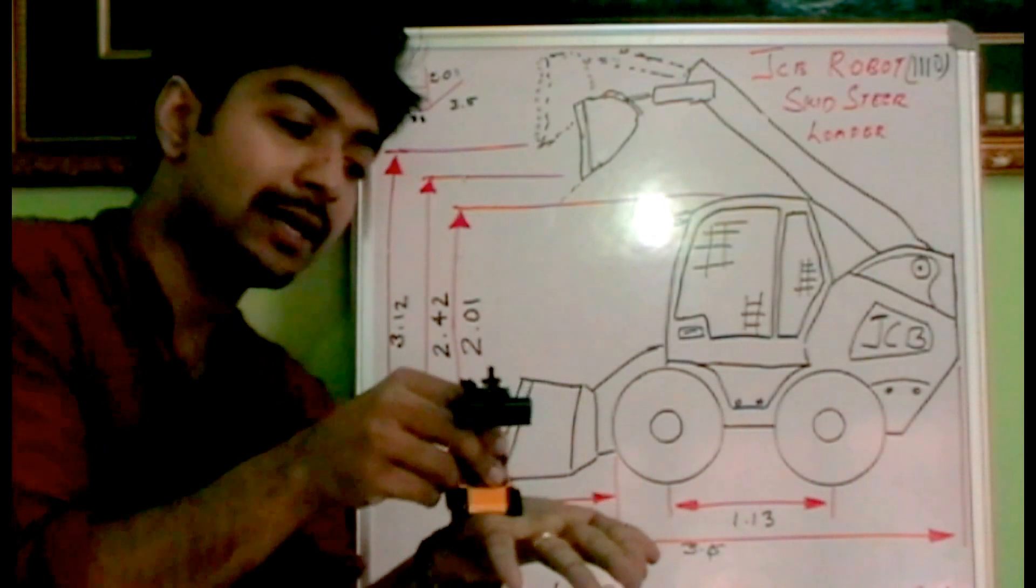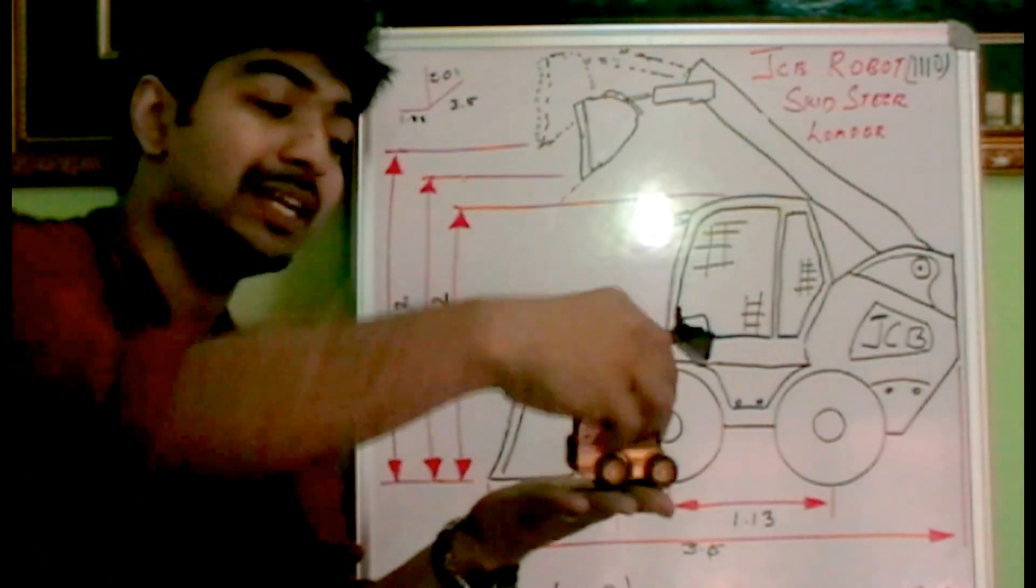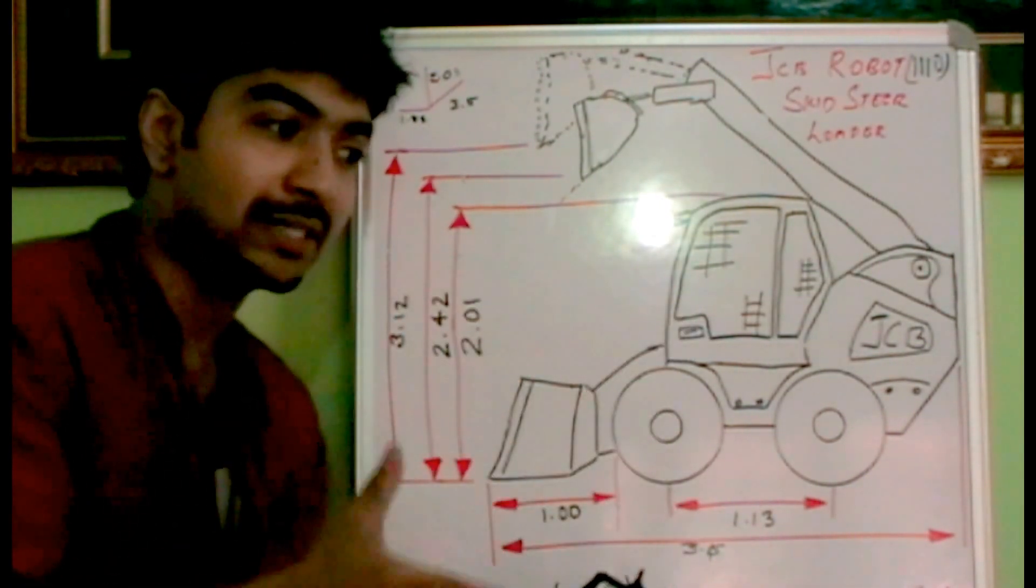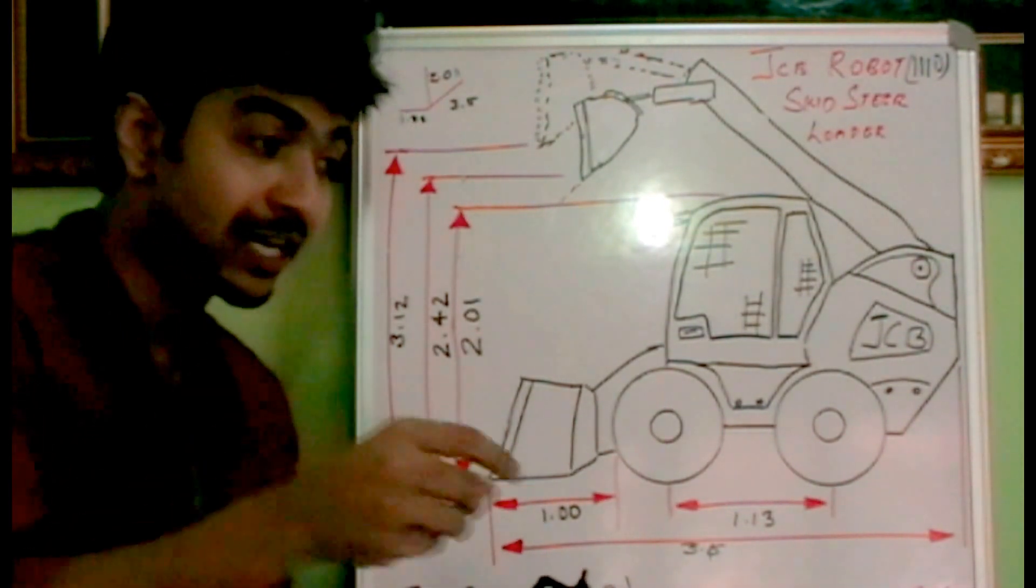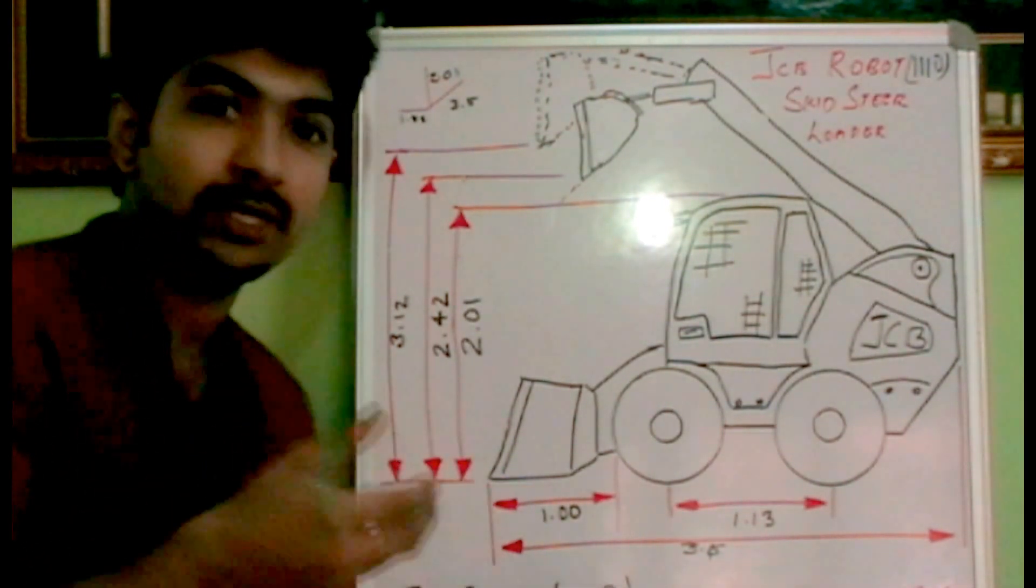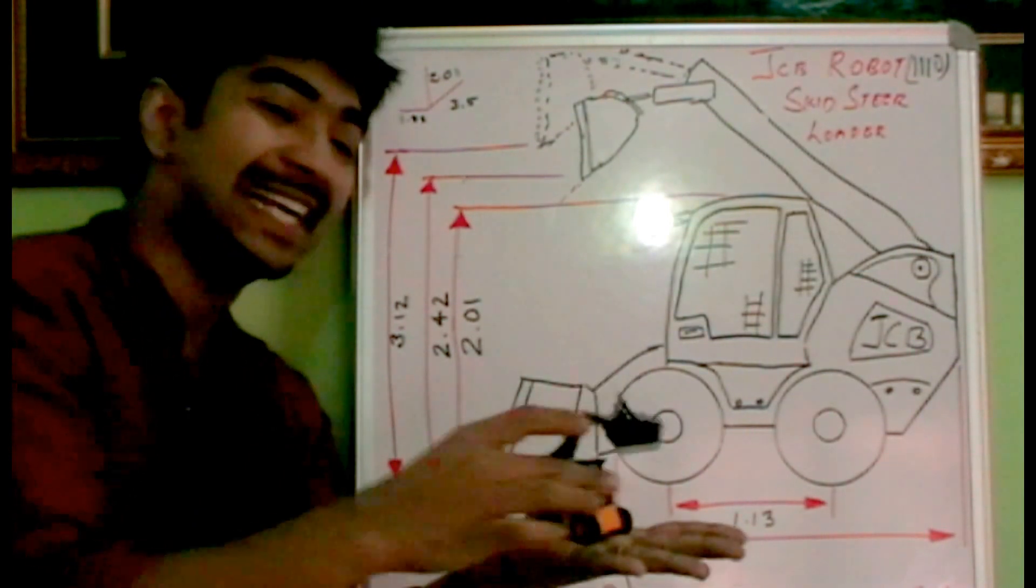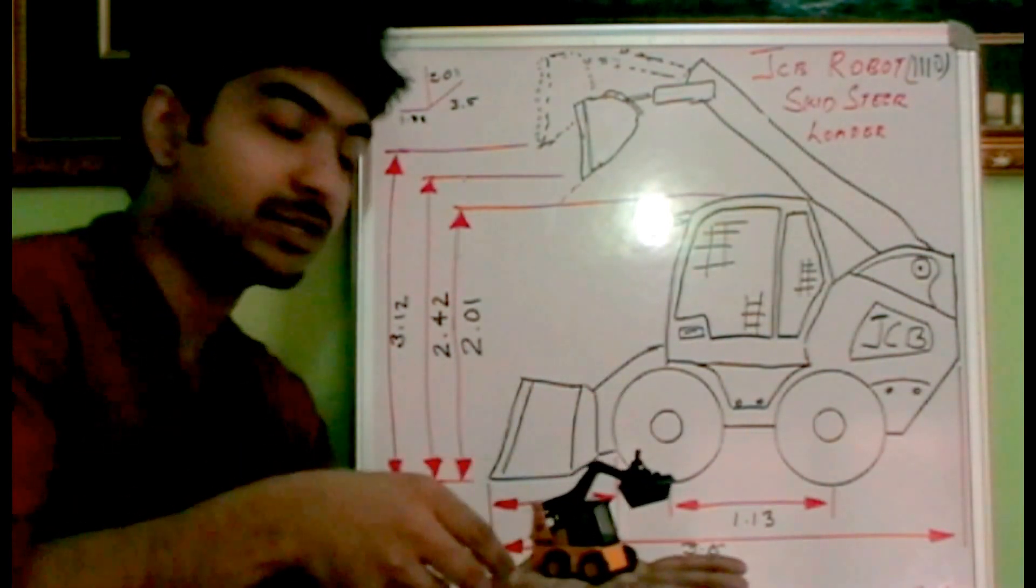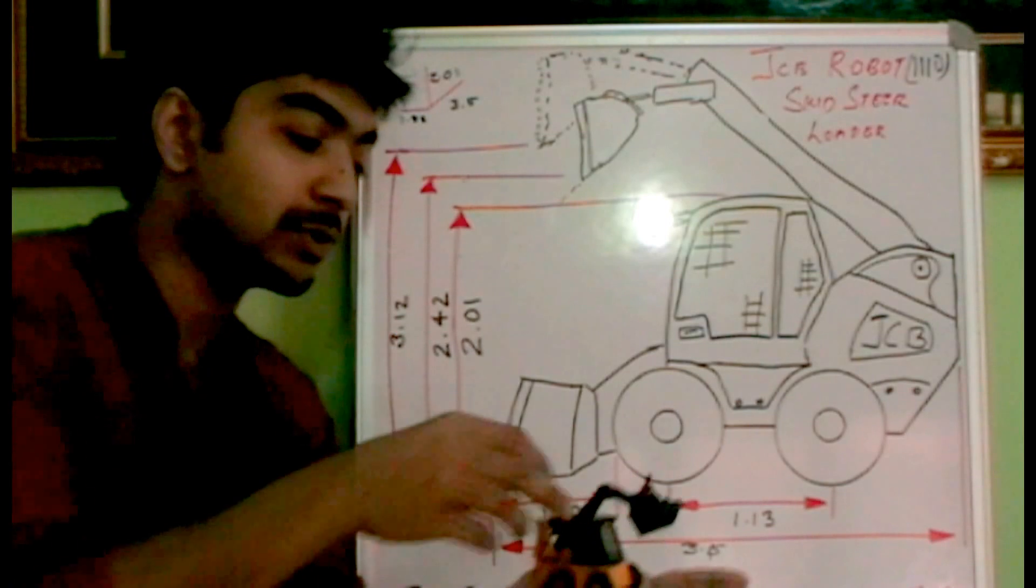If it is not like that, the turning radius will be much more. So in industries, the area will be much less for material handling. So the turning radius must be minimum or must be zero. So as this robot or this machine can skid and steer inside the industry, which will reduce the turning radius to zero.